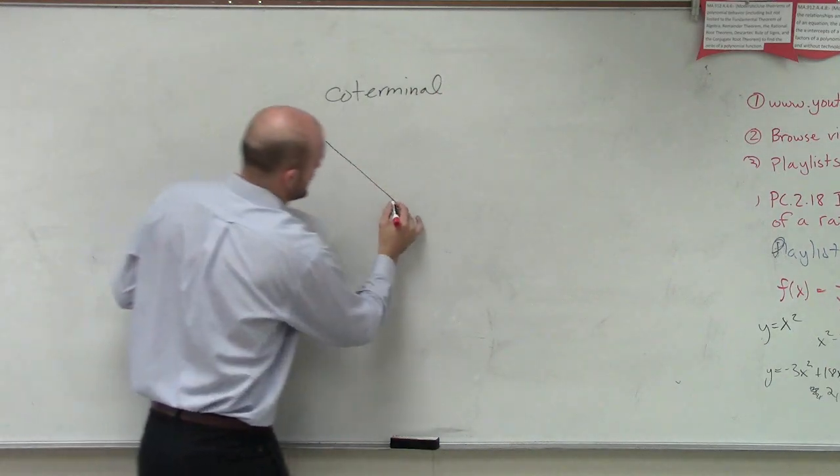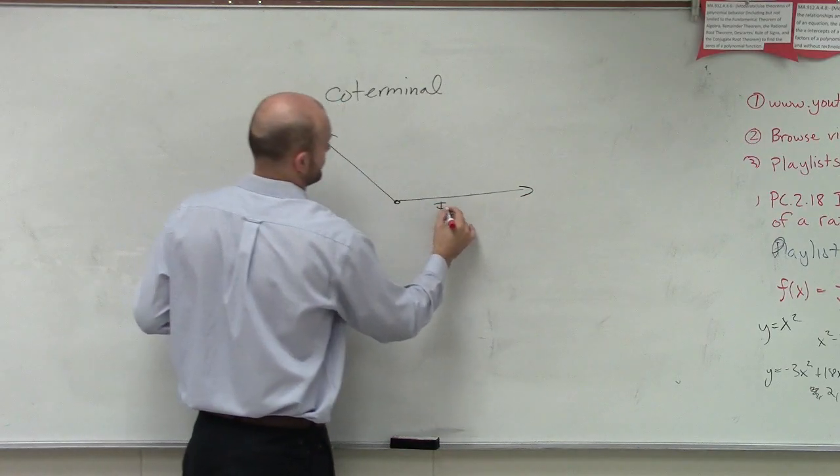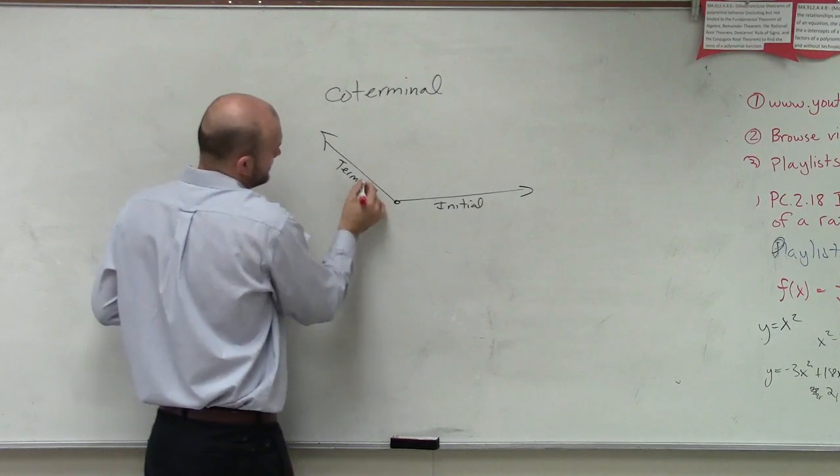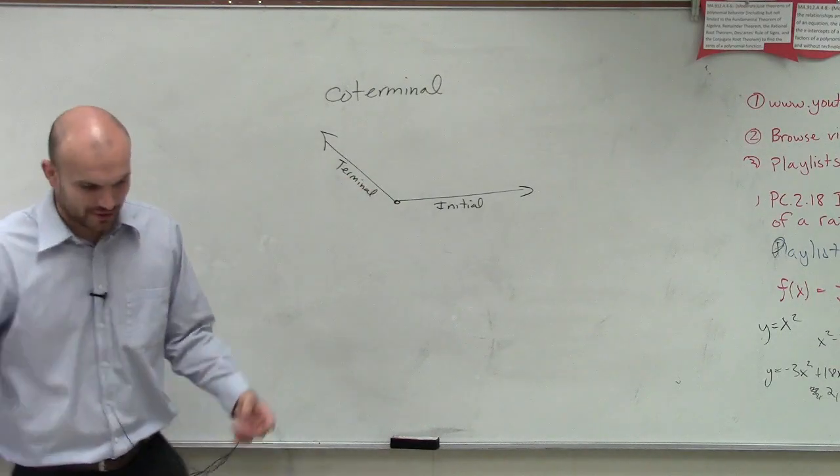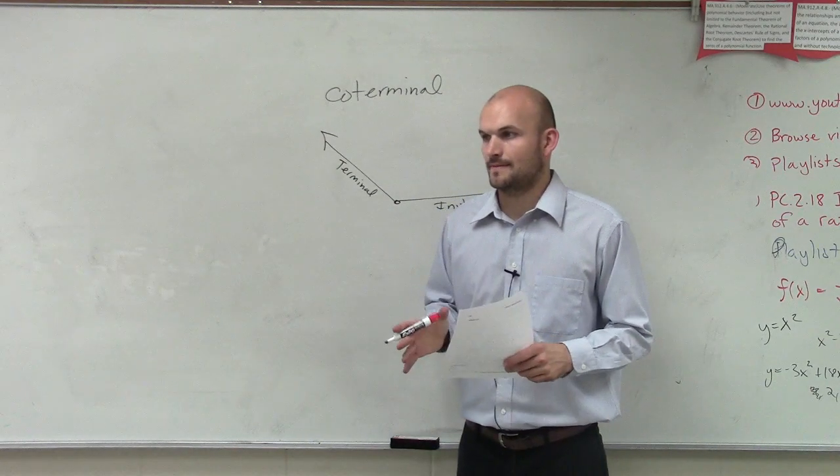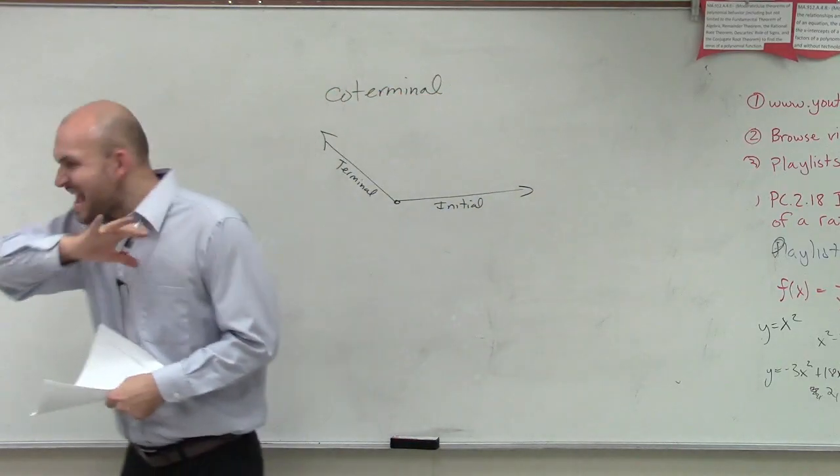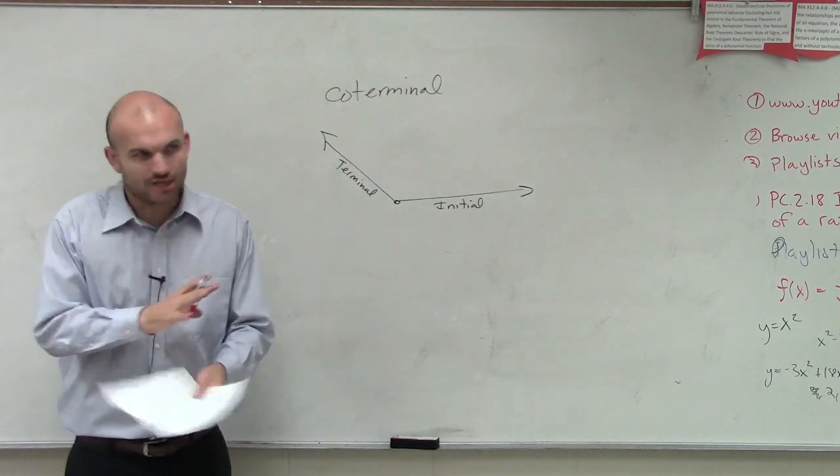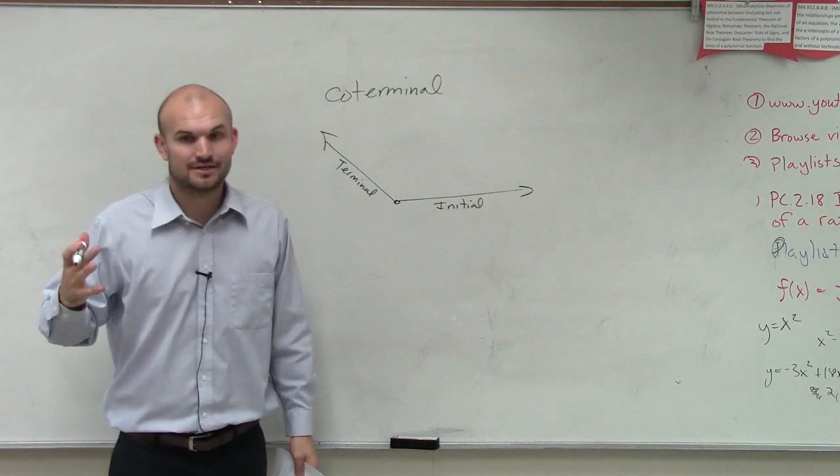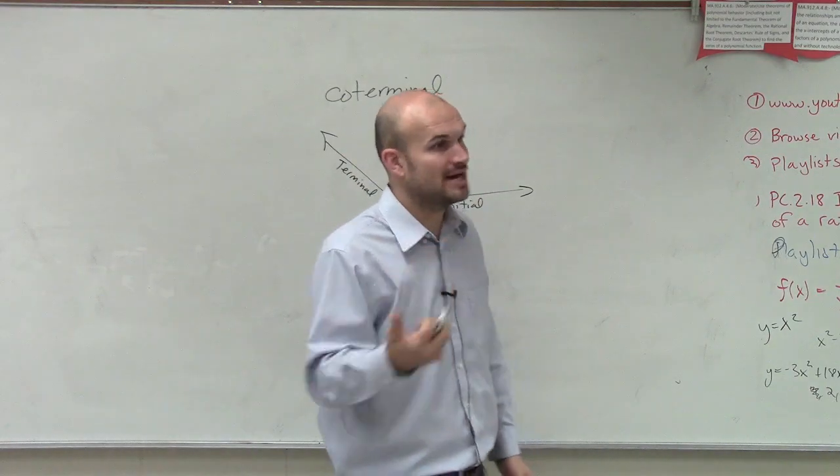Ladies and gentlemen, so far we talked about an initial side and terminal. Did anybody watch any videos or look at their book when they did their homework? Does anybody know the definition of coterminal? An initial and terminal side. So what it is is every single angle, as long as you can draw an angle that has exactly the same initial and terminal side, you got coterminal angles.